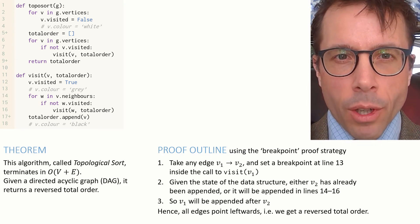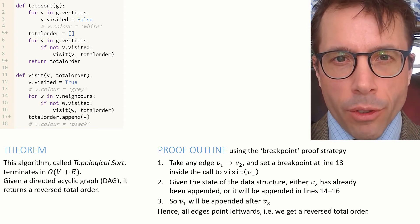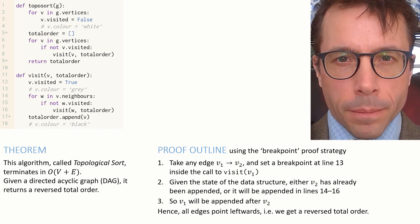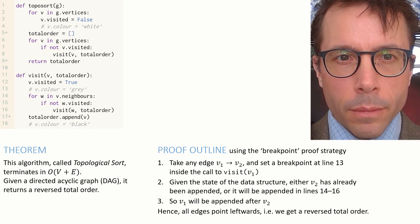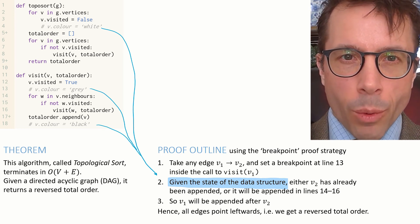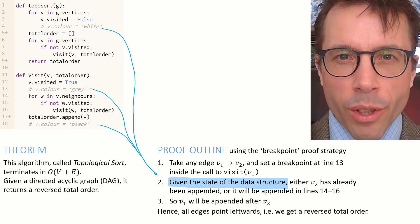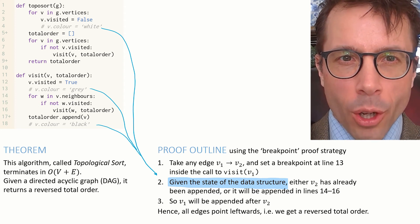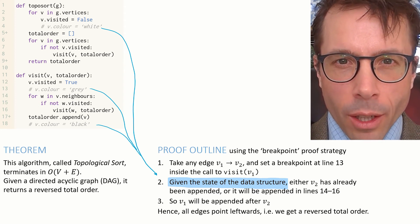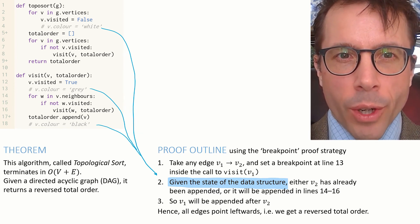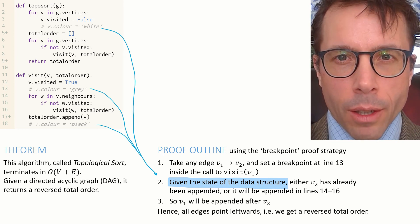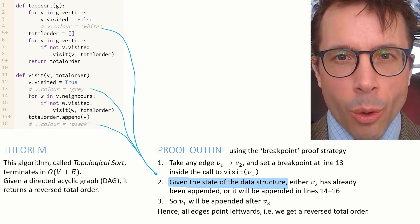What the proof involves is arguing that either v2 must already have been appended to the total order, or it will be appended in the course of the current call to visit v1. Either way, v1 will be appended after v2. And the argument that we need here is a lovely little thing - it involves reasoning about what must have happened earlier during the execution. And to make that reasoning clear, we'll manifest the execution history into the data structure with these three comment lines here.